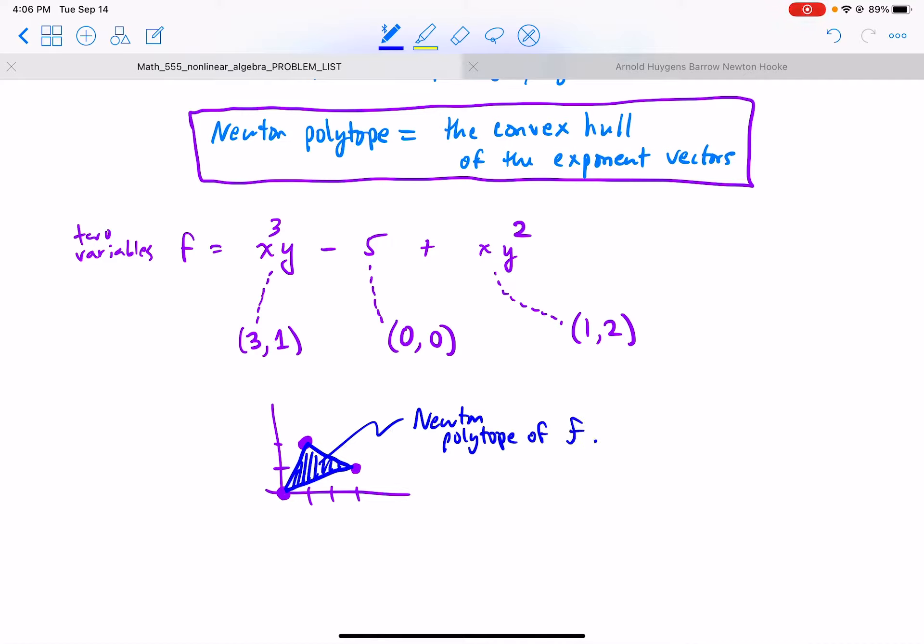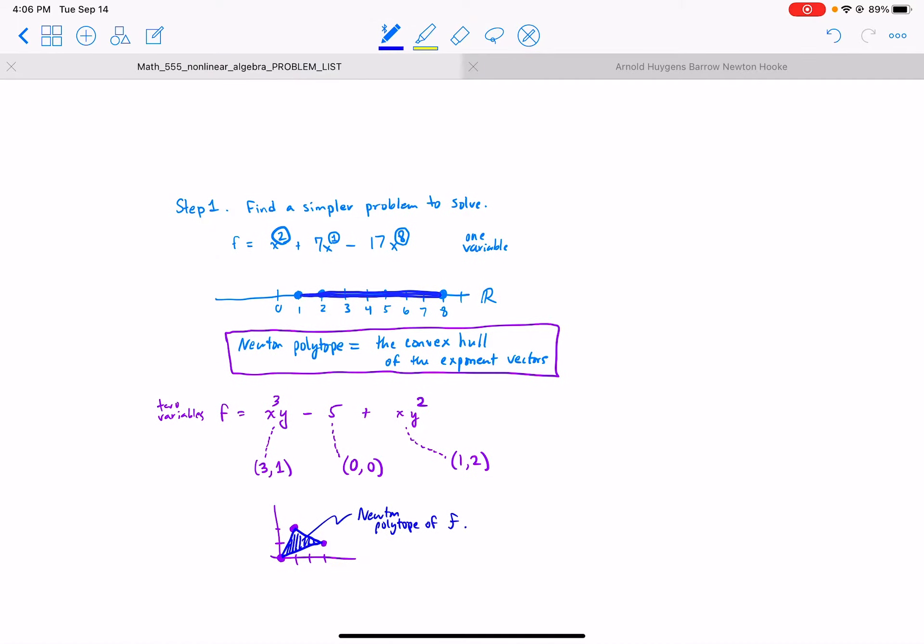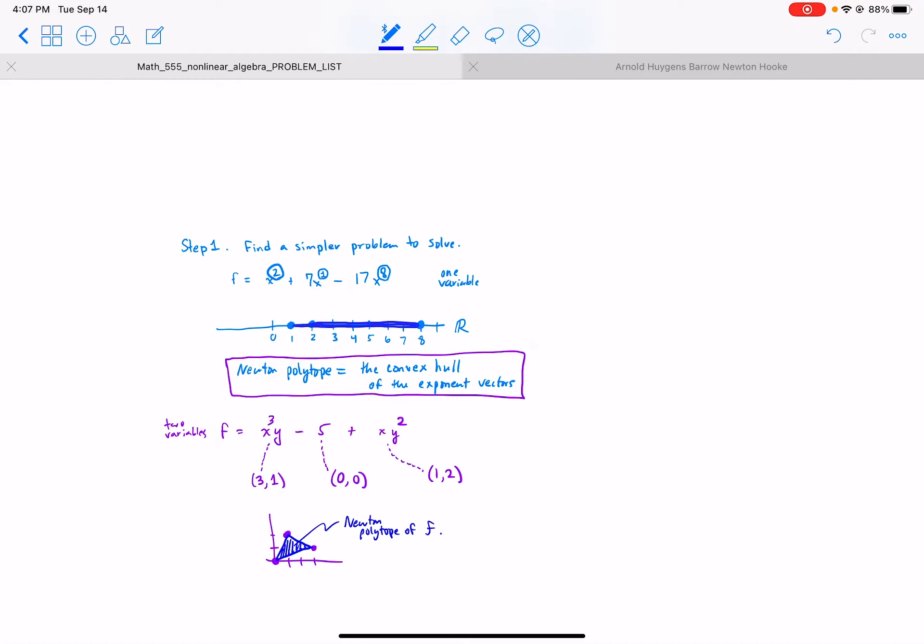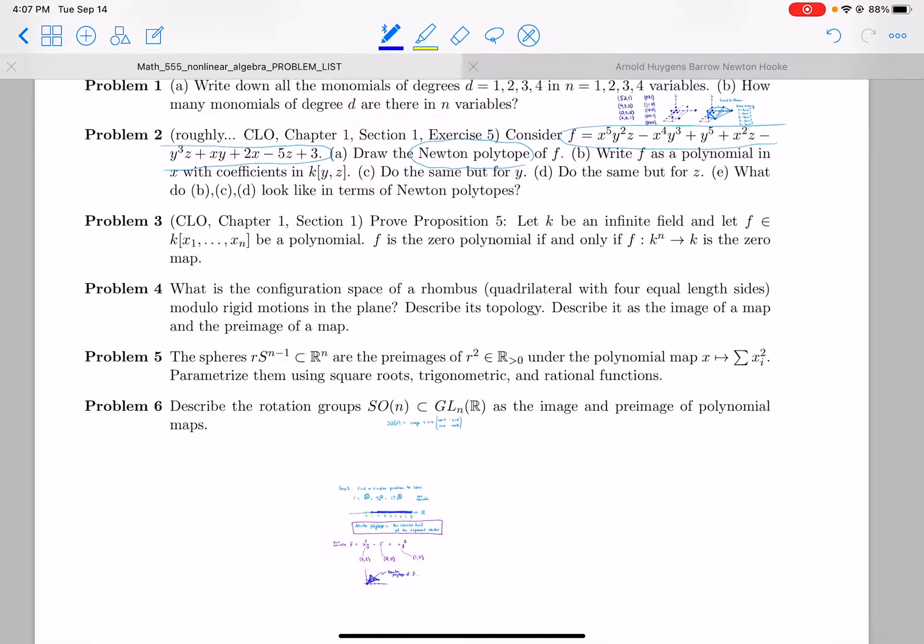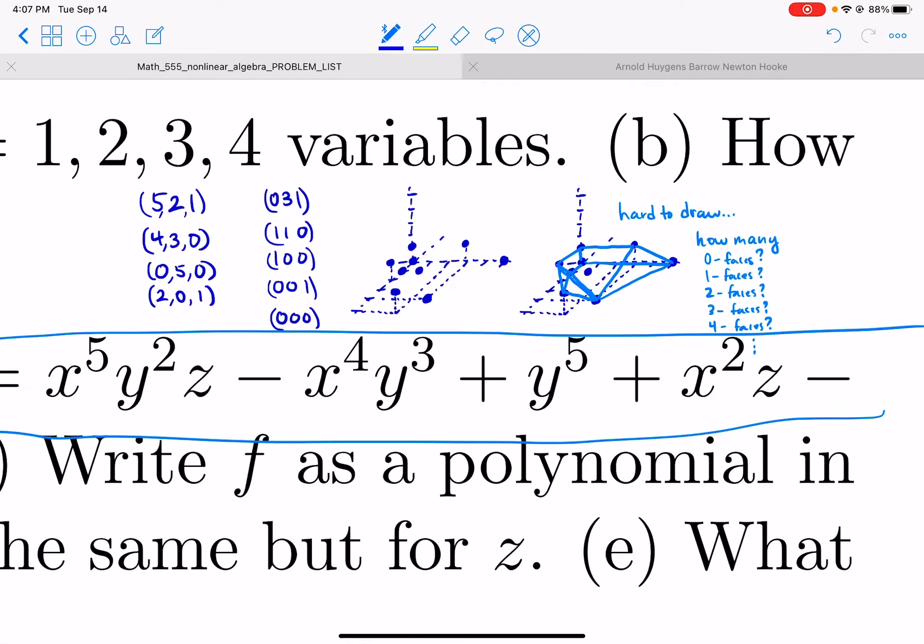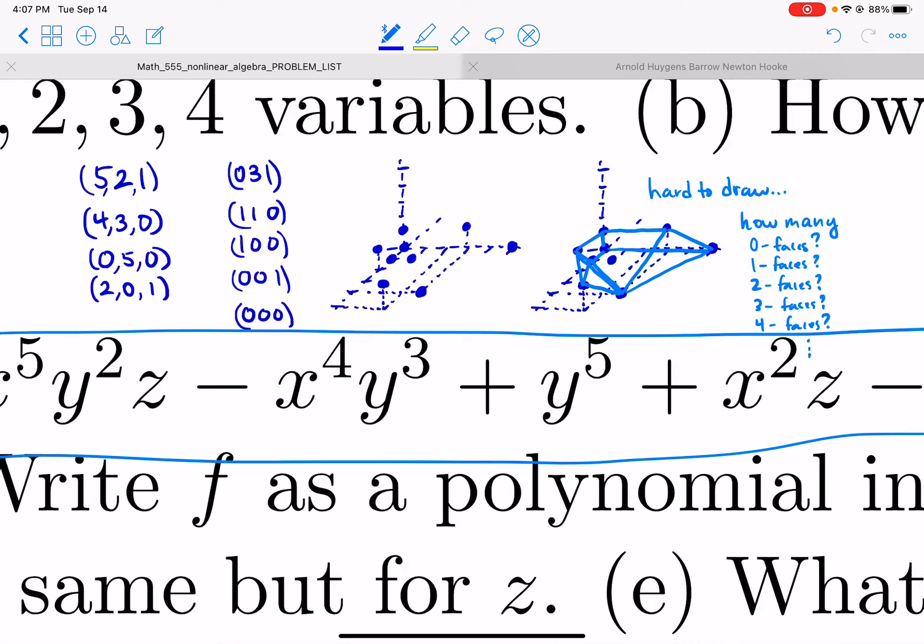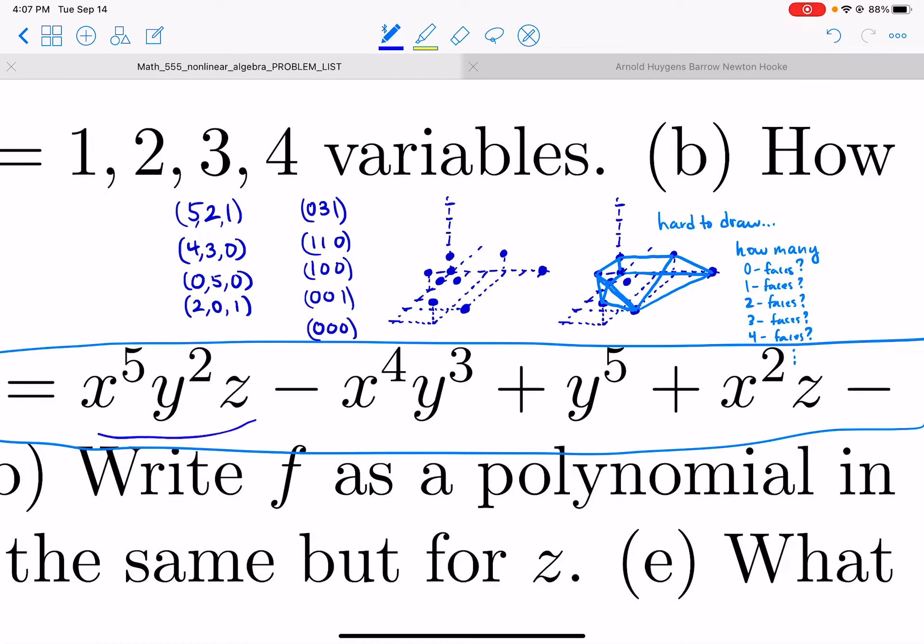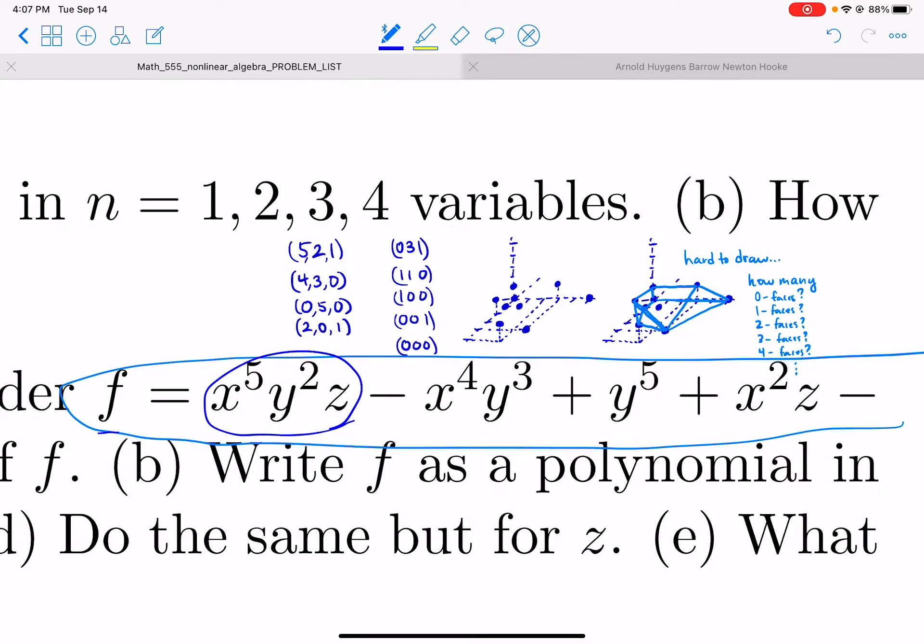Okay, let's do another. Well, let's do the real one. Luckily I already did it. So here we have, so this term in our polynomial f, this is from the actual problem, two has the exponent vector five two one. This term has the exponent vector four three zero.